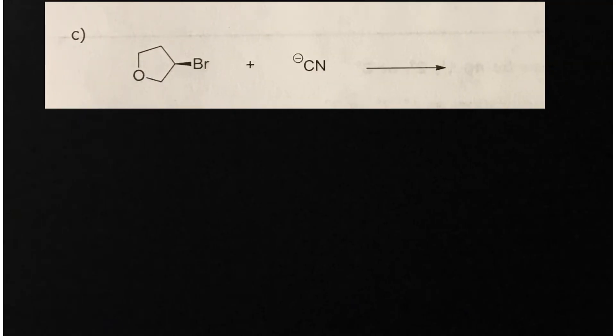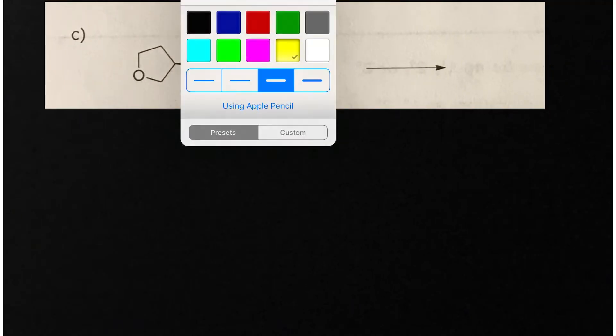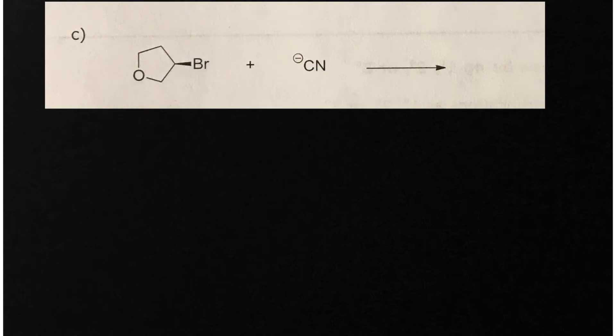In part C here's the area that's somewhat gray. We said if it's primary it's SN2, if it's tertiary it's SN1, what about secondary? Here's the alpha carbon and this is connected to one, two carbons, so this is a secondary alkyl halide. It can be SN2 or SN1. So how do you decide?